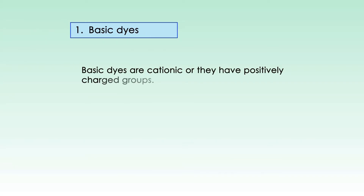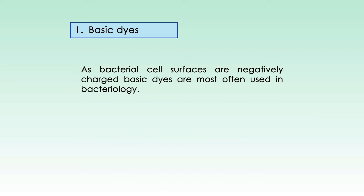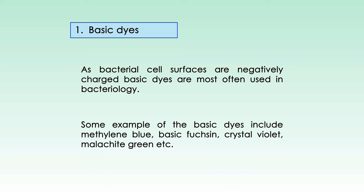Dyes are classified into three general classes based on the nature of their charge group. The first is basic dye. Basic dyes are cationic, or they have positively charged groups. They bind to negatively charged molecules like nucleic acids and proteins. As bacterial cell surfaces are negatively charged, basic dyes are most often used in bacteriology. Some examples include methylene blue, basic fuchsin, crystal violet, and malachite green.